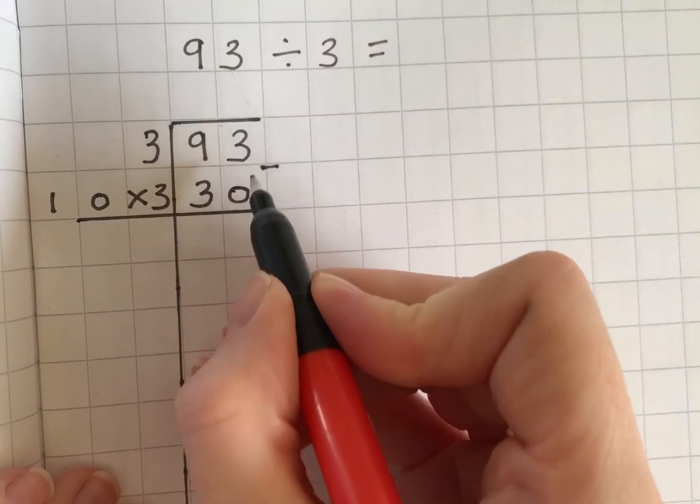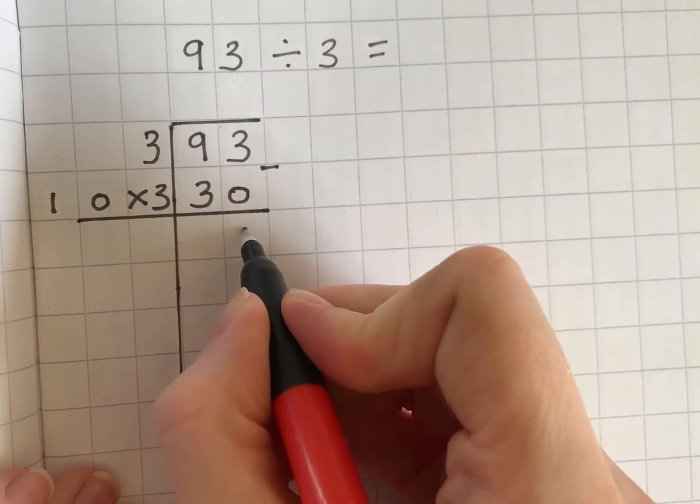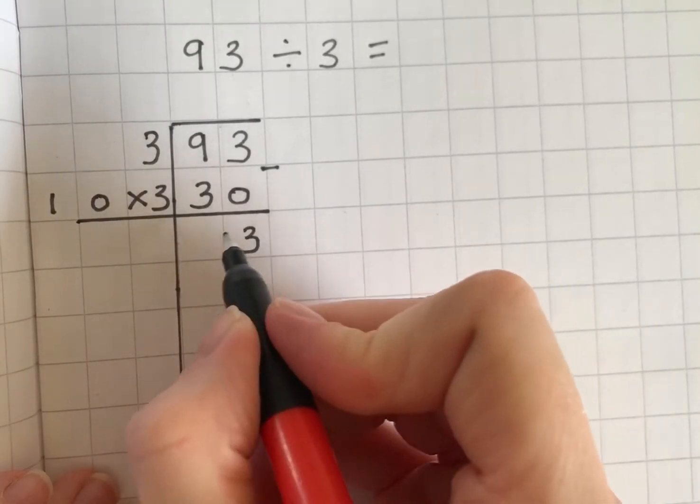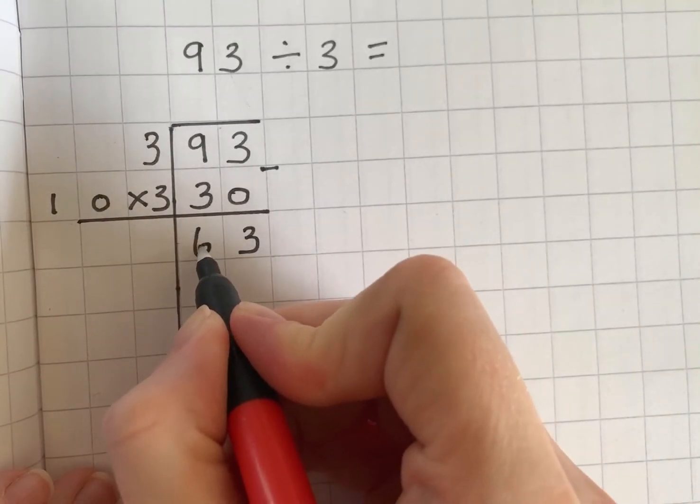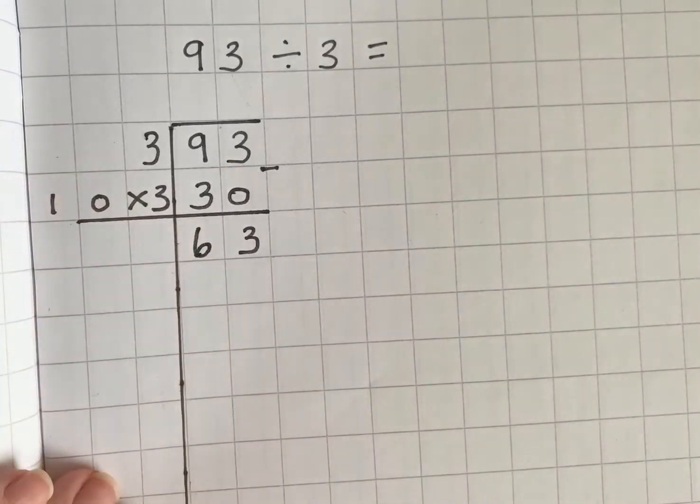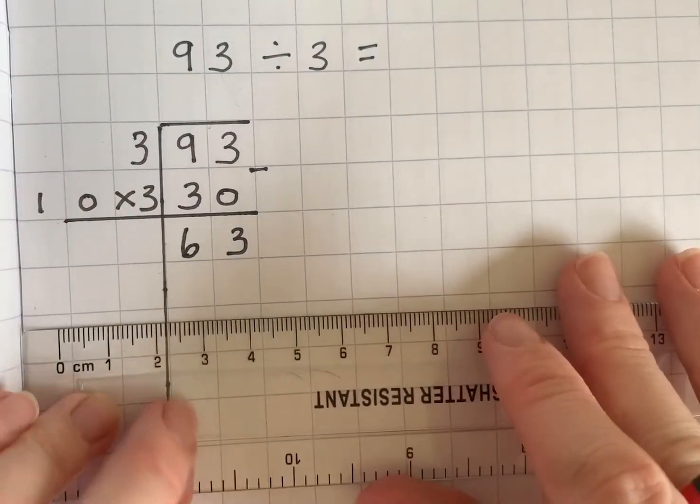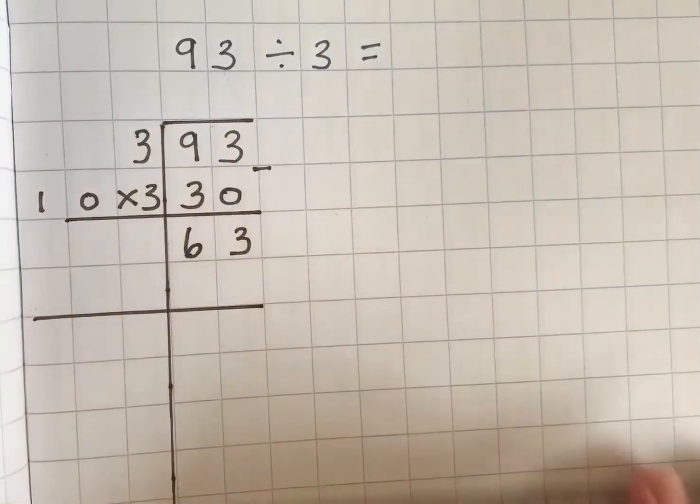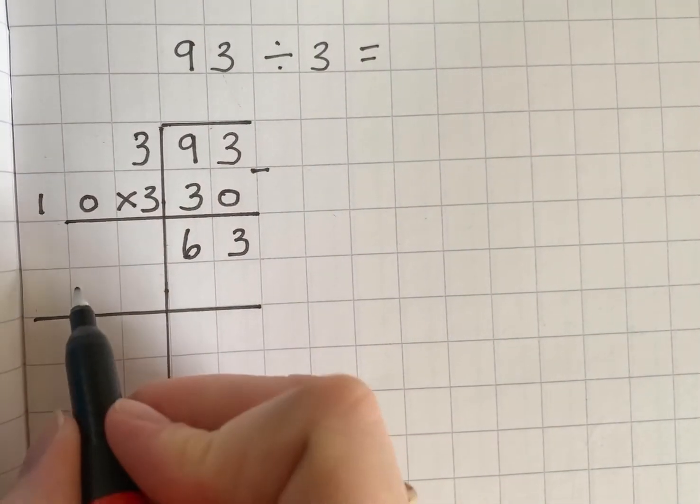I've got 3 ones take away 0 is 3 and 9 tens take away 3 tens is 6 and I'm left with the number 63 and again I can still take away another chunk of 10 times 3.